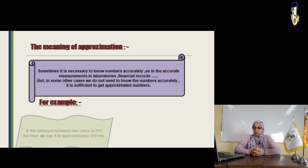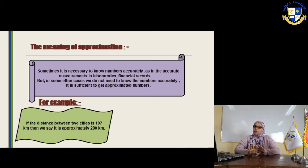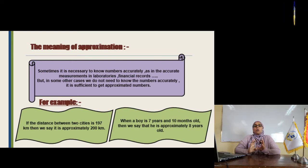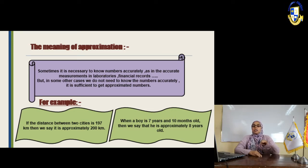For example, if the distance between two cities is 197 km, we say it's approximately 200 km. When a boy's age is 7 years and 10 months, we can say his age is approximately 8 years. Not 8 exactly, but the nearest number to 7 years and 10 months is 8.